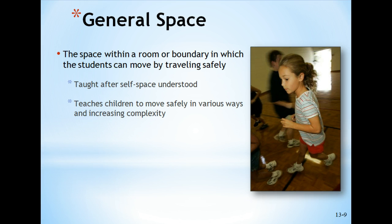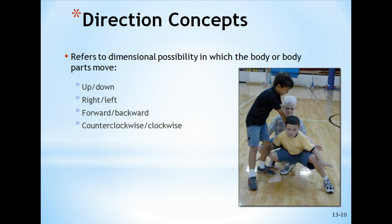What I said about the bubble is an example of using imagery with students. You always want to give them a mental picture of what you're asking them to do, especially at younger ages. The space within a room or boundary is what we call general space. We try to teach children to move and travel safely throughout that room or boundary — what I usually call a work space or work area. It is taught after self-space is understood. They can move through general space in directions: up, down, right, left, forward, backward, counterclockwise, and clockwise.